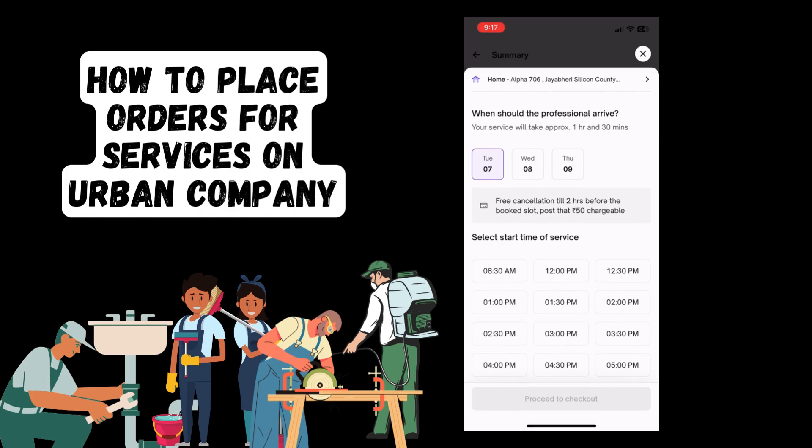It will now provide you with slot options. You can choose a suitable date and time for when you would like the service to occur. It will also provide an approximate time limit for how long the service will take — for example, here it says approximately one hour thirty minutes. Once you've selected your date and time, you can select proceed to checkout.